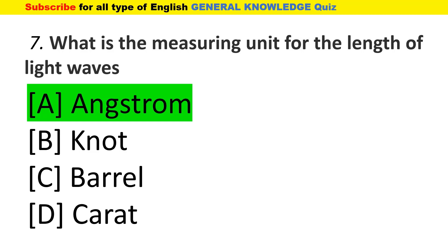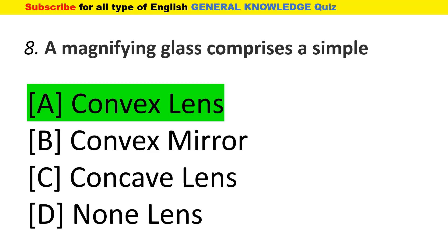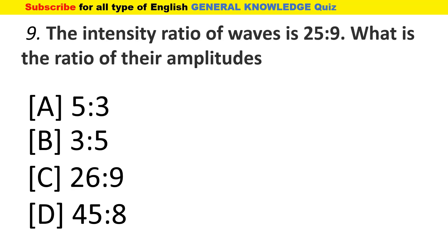What is the measuring unit for the length of light waves? The answer is Angstrom. A magnifying glass comprises a simple convex lens. The intensity ratio of waves is 25:9 — what is the ratio of the amplitude? The answer is 5:3.